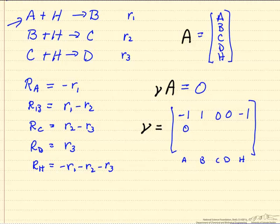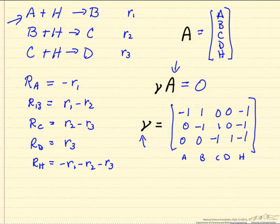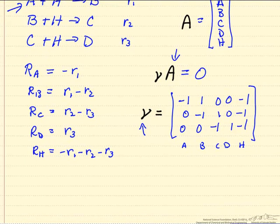Using that same idea, I can write down for the second reaction and then for the third reaction the stoichiometric coefficients. And so this matrix nu times the matrix A equal to 0, which is equivalent to writing these reactions with everything on the right side: minus A minus H plus B equals 0.